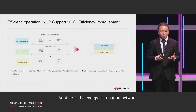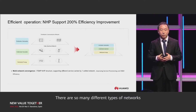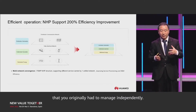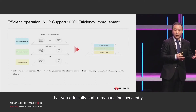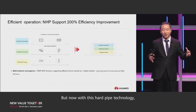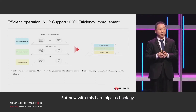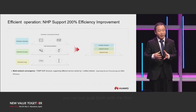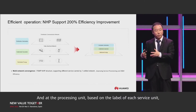Another example is the energy distribution network. There are so many different types of networks that you originally had to manage independently. But now with this hard pipe technology, you can just grab them with the fiber and add to the processing unit.